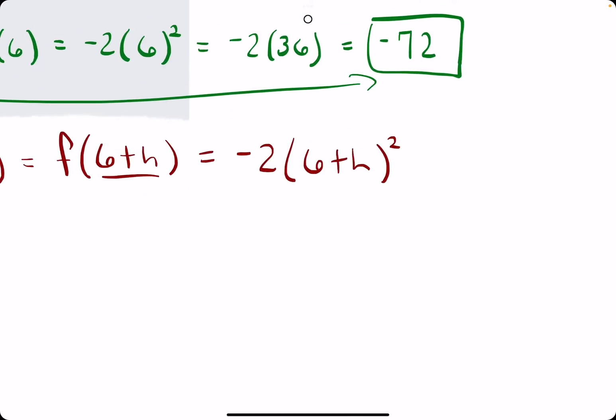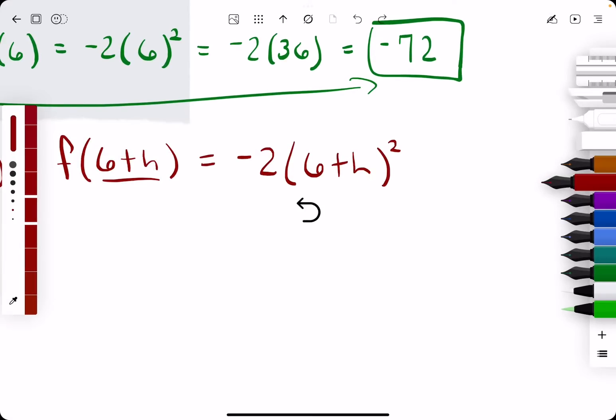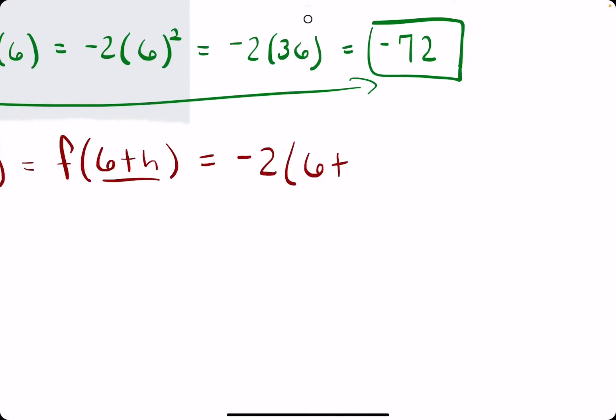So what we want to do is go ahead and expand 6 plus h squared. When we do that, we'll have the first term squared, so 36,